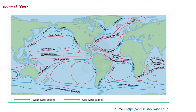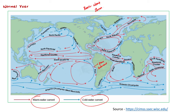Now let us see El Niño. To understand El Niño, we must first look at the conditions prevailing along the Peruvian coast — that is, in the eastern Pacific region. This is the ocean current pattern during normal years. Cold currents are highlighted in blue and warm currents in red. You can find a cold current near the Peruvian coast called the Peru current. So in a normal year, the sea surface temperature in the eastern Pacific is cold. Cold currents are associated with areas of upwelling.